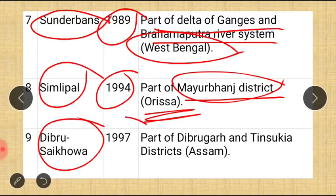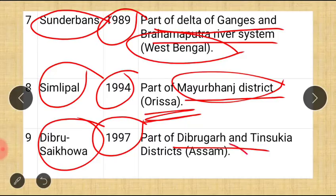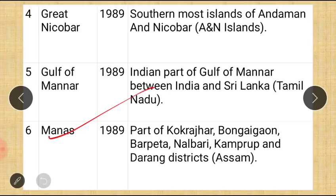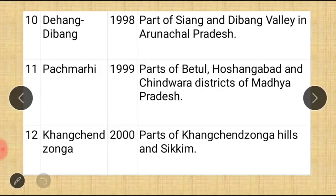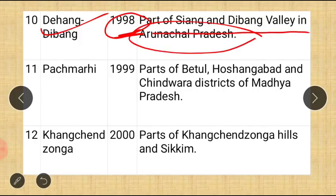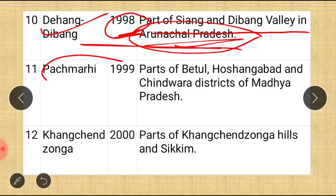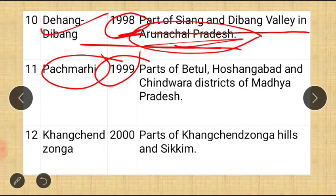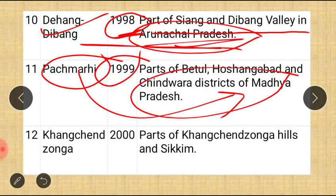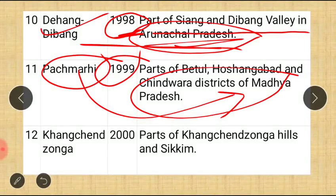The ninth is Dibru-Saikhowa, notified in 1997, part of Dibrugarh and Tinsukia Districts of Assam — this is the second biosphere reserve in Assam after Manas. The tenth is Dihang-Dibang, 1998, part of Siang and Dibang Valley of Arunachal Pradesh — it is associated with the Brahmaputra river system. The eleventh is Pachmarhi, 1999, parts of Betul, Hoshangabad, and Chhindwara Districts of Madhya Pradesh.